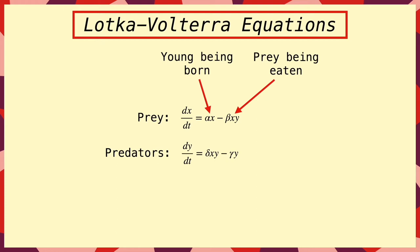And there's also a term for the prey being eaten, which is proportional to the sizes of both the prey population and the predator population. This makes sense intuitively, because the more prey and predators there are, the more chances there are for them to encounter each other, resulting in a nice meal for the predator.